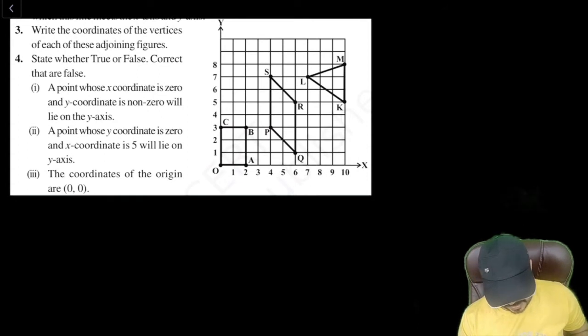First of all let's understand what is written into this question. In the third question it is write the coordinate of the vertex of each of these adjoining figures. So they have given us four different figures. One is O, A, B, C.